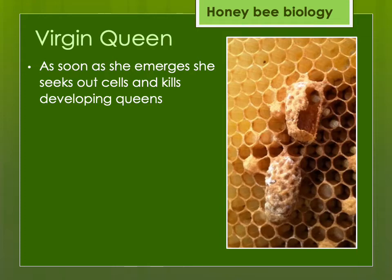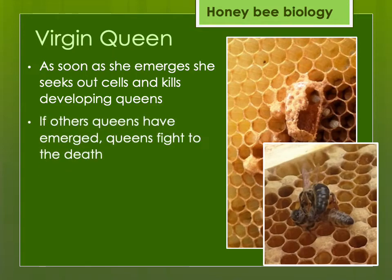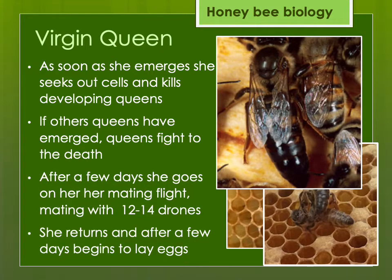Queen cells look a little bit like a peanut on the comb. As soon as the first queen emerges from her cell, she will seek out the cells of her sister queens and kill them all to avoid having to fight them to the death. But if two queens emerge at the same time, they will fight to the death — there can be only one queen in a hive, with very few exceptions. After a few days she will go on her mating flight, roughly five to seven days after she emerges, mating with an average of 12 to 14 drones. After about three days she'll begin laying eggs — basically becoming the mother of all the bees in the colony and an egg-laying machine. The more eggs she lays, the more bees there are in the colony.